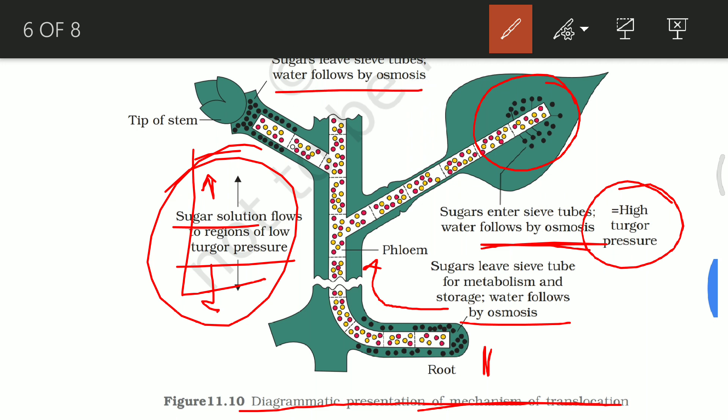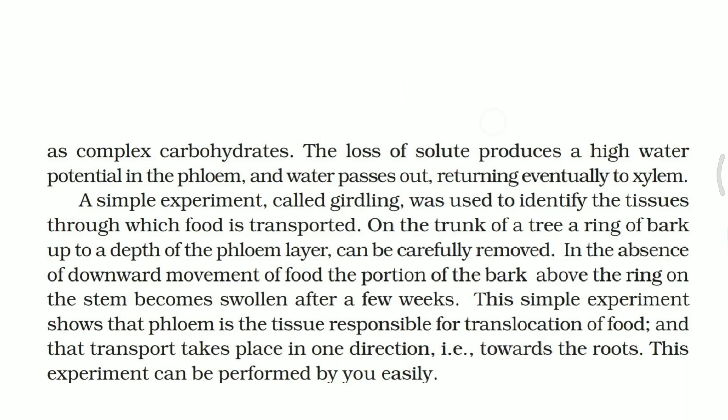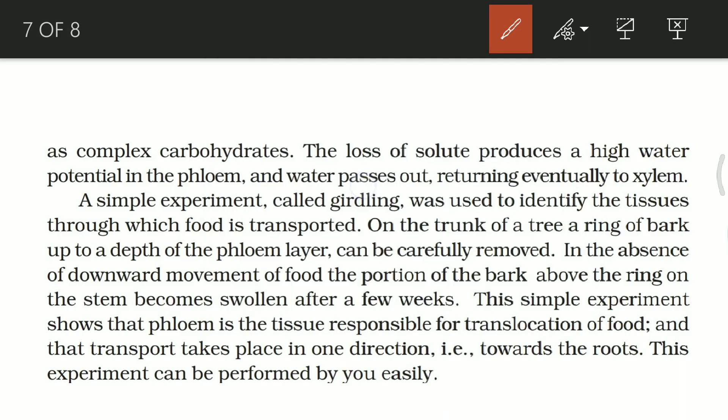As shown in the diagram, sugar leaves the sieve tubes at the sink for metabolism and storage, and water follows by osmosis from high concentration to lower concentration through the phloem. The loss of solute at the sink produces high water potential in the phloem, and water eventually returns to the xylem.